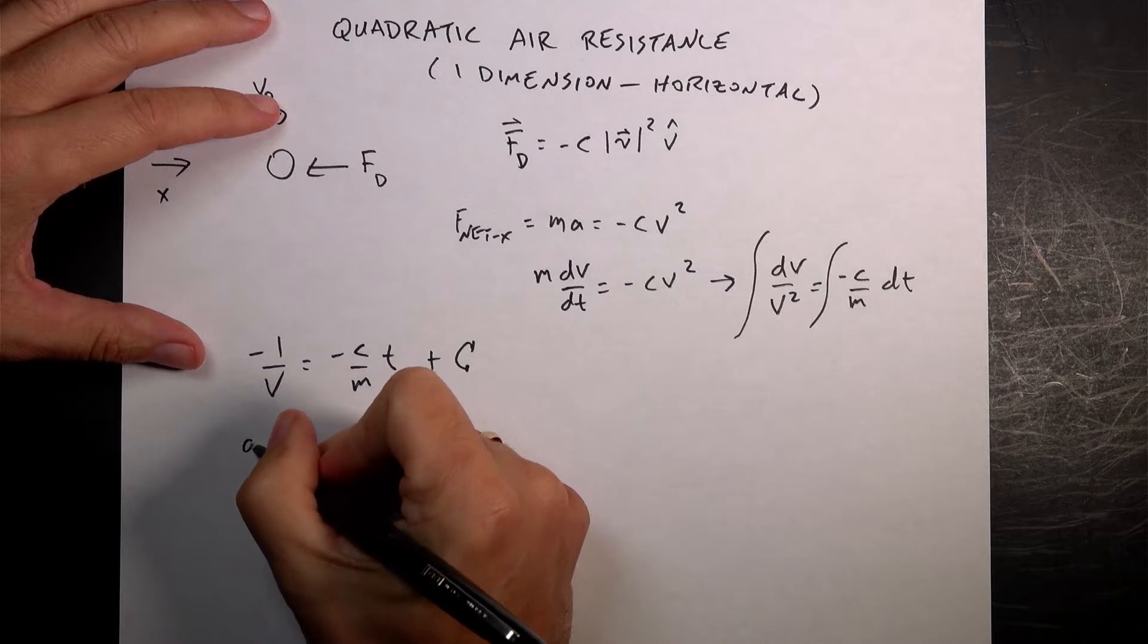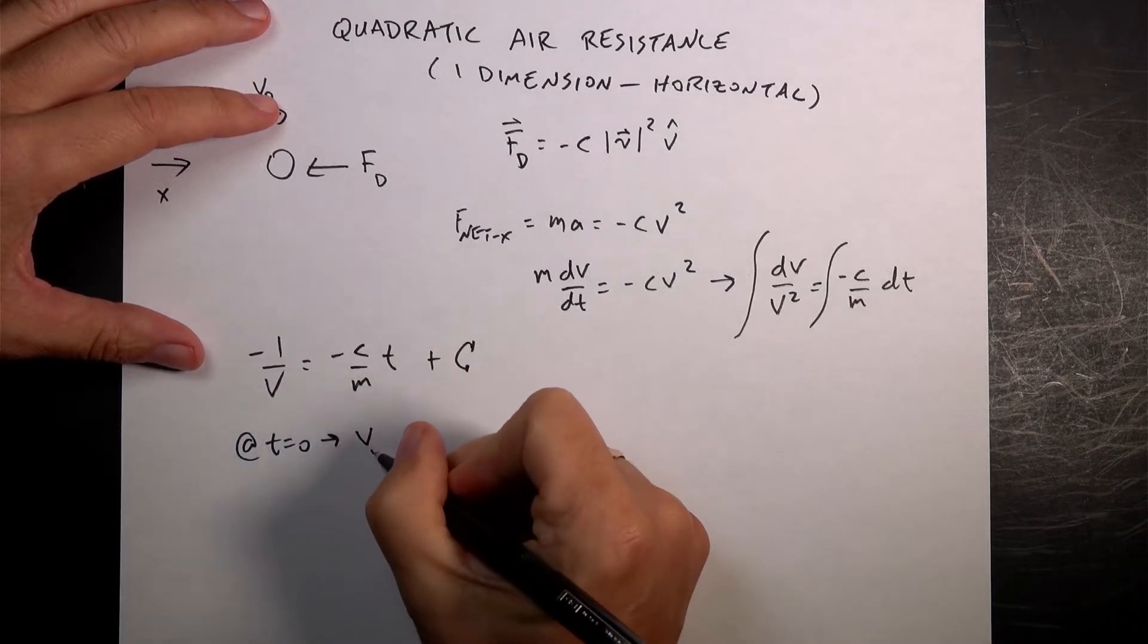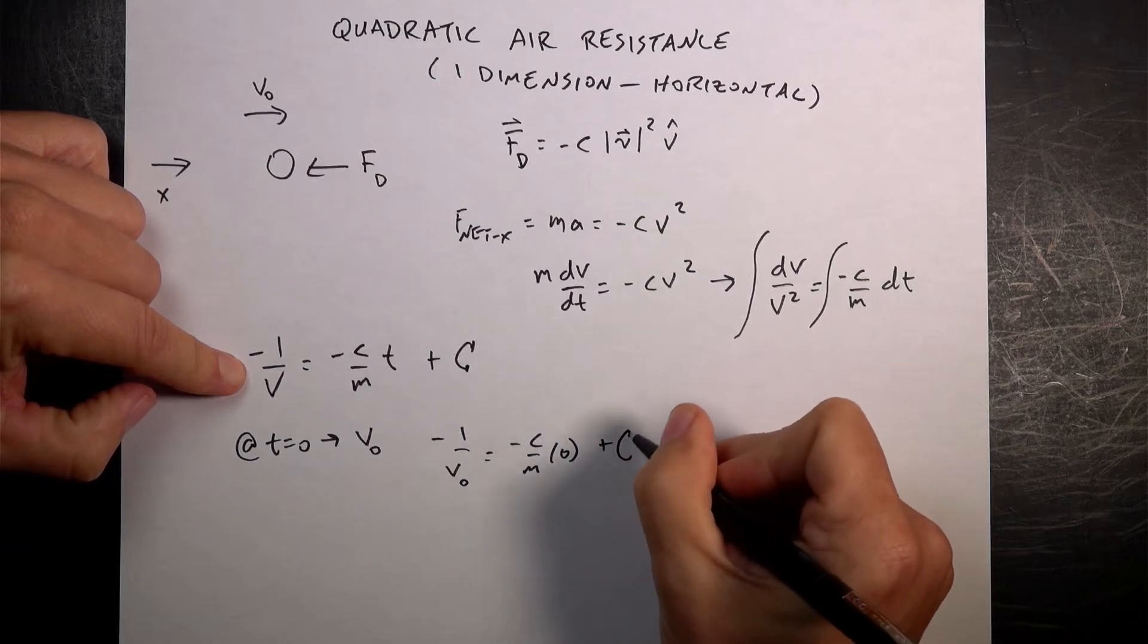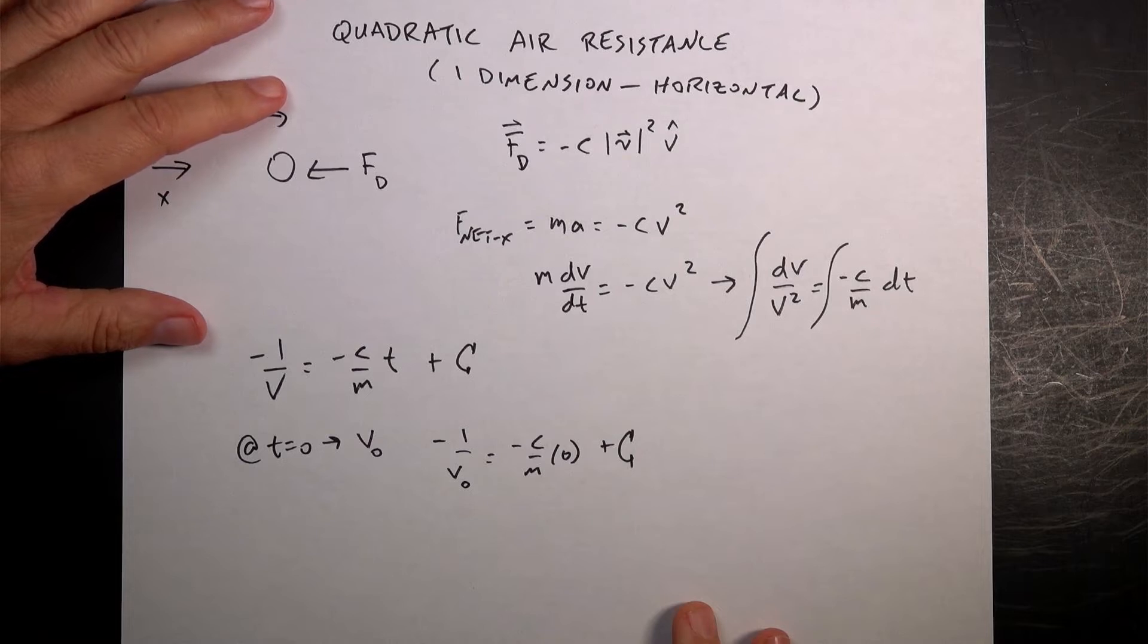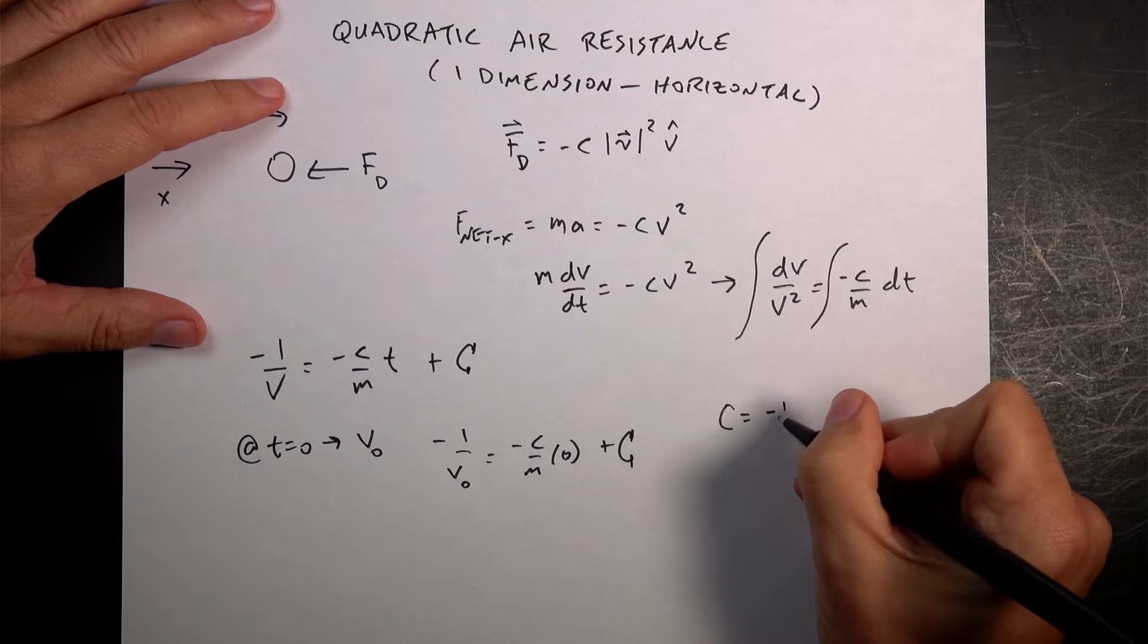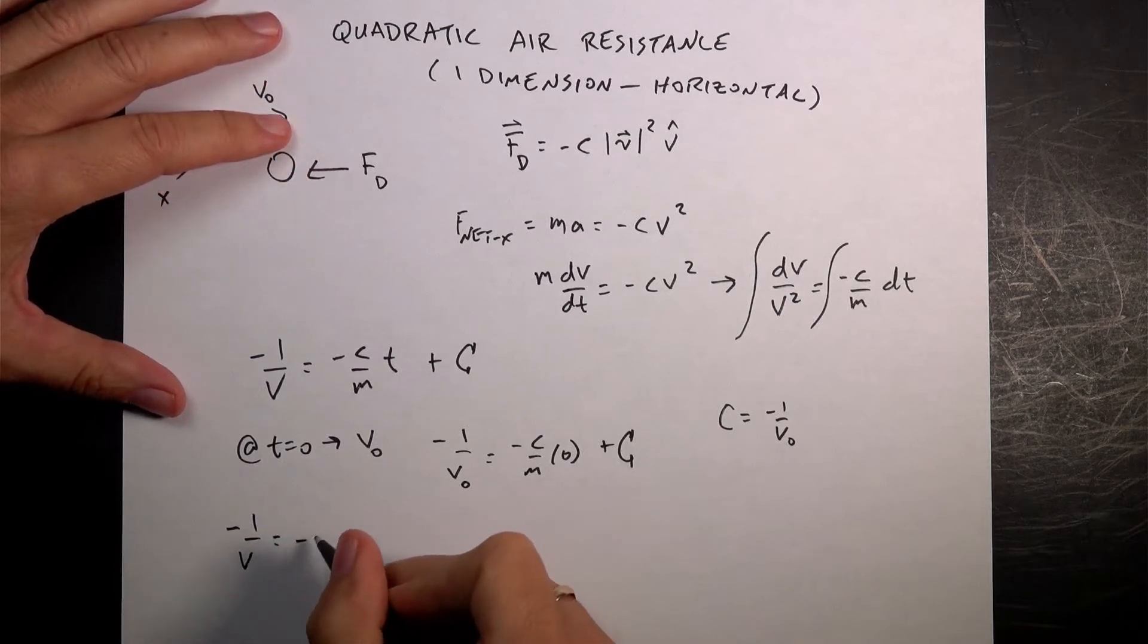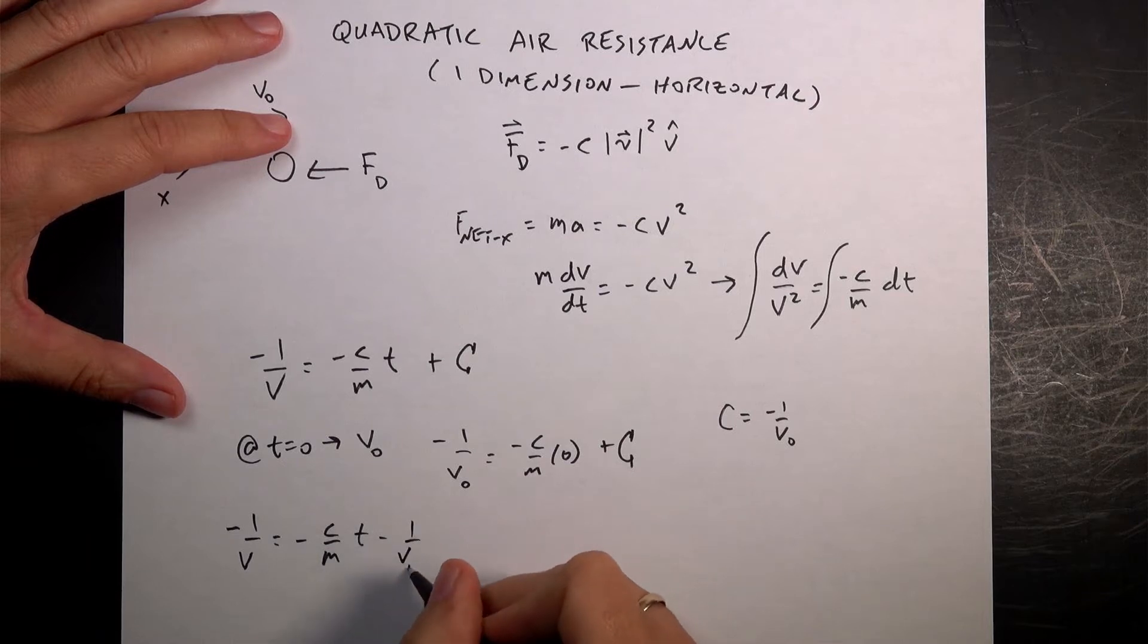Now I can solve for that constant. I can say at t equals 0, the velocity is v0. So if I put that in, I get negative 1 over v0 equals negative c over m times 0 plus capital C. I know that's not really a capital C, but I just made that up. So that means that that term's zero, so the constant's negative 1 over v0. So if I put that back in, I get minus 1 over v equals negative c over m t minus 1 over v0.